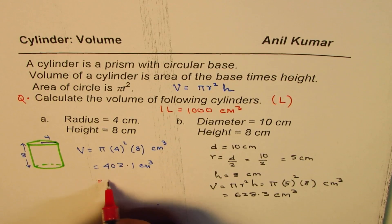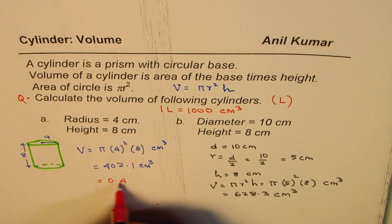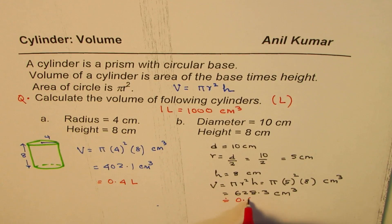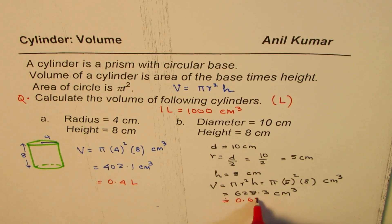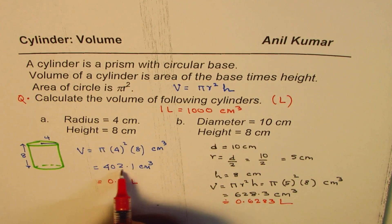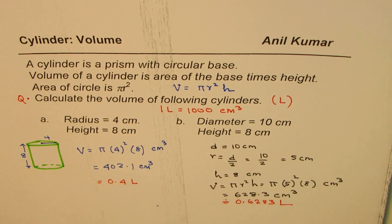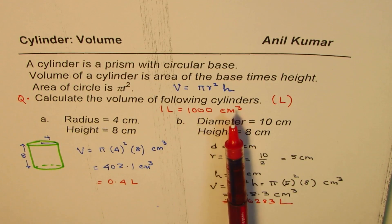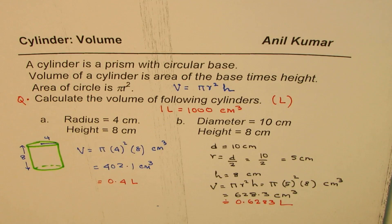So this one will be 0.4 approximately liters. And this will be approximately 0.6. And if you want to write to four decimal places in liters, you could do this. And this will be 402.4021. So anyway, liters is also a unit to measure the volume. And it's related with centimeter cube by a factor of 1000.